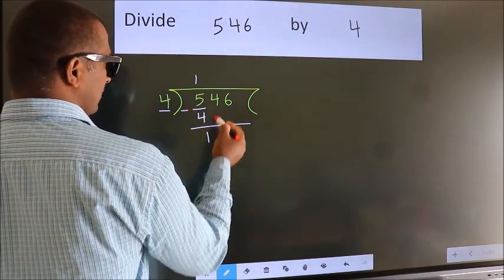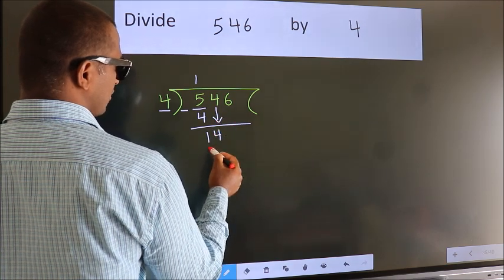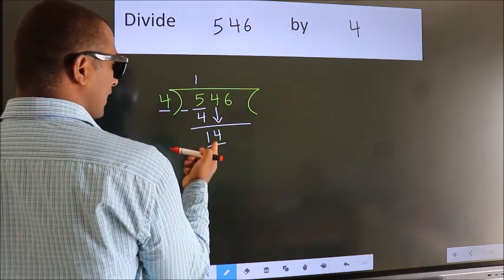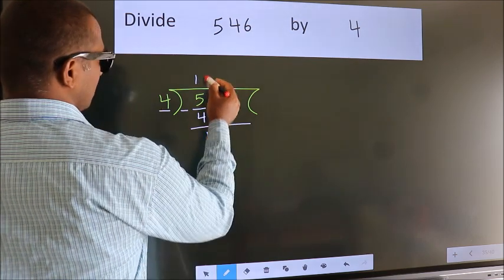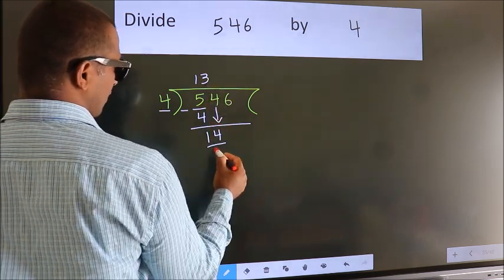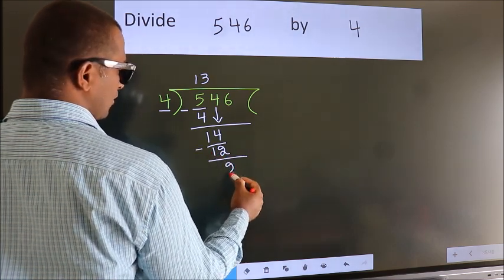After this, bring down the next number. So, 4 down, making 14. A number close to 14 in the 4 table is 4 times 3 is 12. Now, we subtract. We get 2.